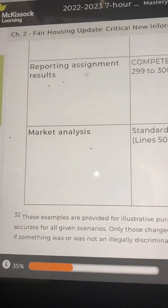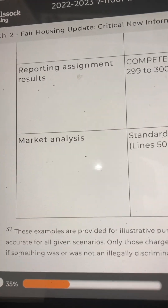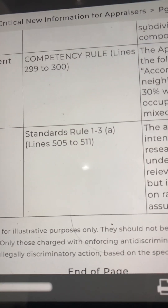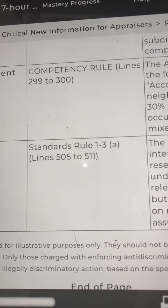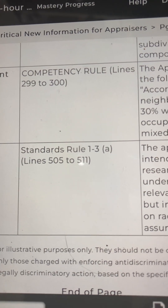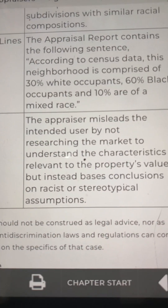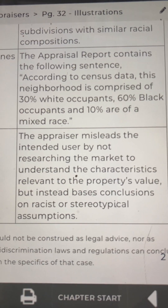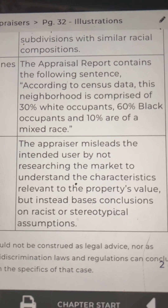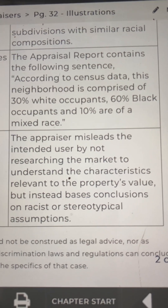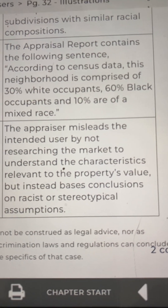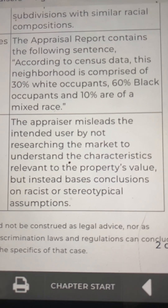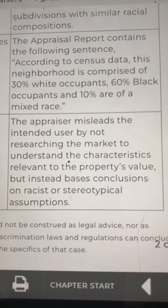The next step is market analysis. The USPAP reference is Standards Rule 1 through 3A, lines 505 to 511. An example: the appraiser misleads the intended user by not researching the market to understand the characteristics relevant to the property's value, but instead bases conclusions on racist or stereotypical assumptions.